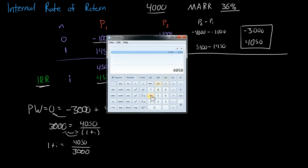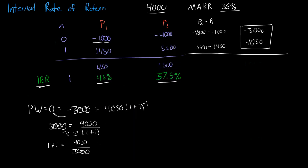$4,050 divided by $3,000, that's equal to $1.35. So, we just say that is equal to $1.35. Now, we're going to subtract 1 from both sides. Subtract 1. So, I is equal to 35%.